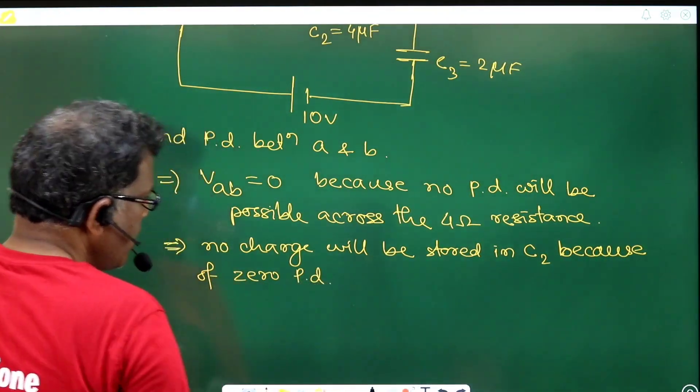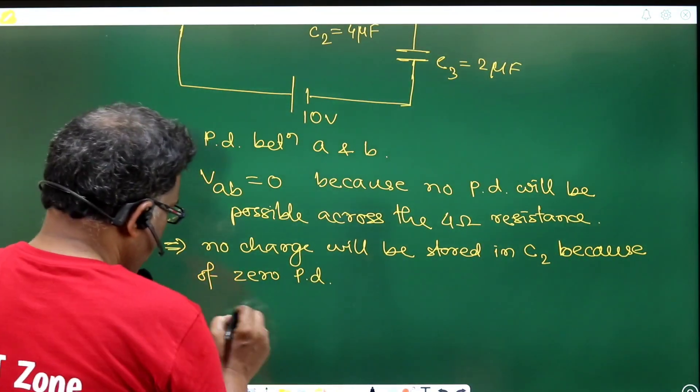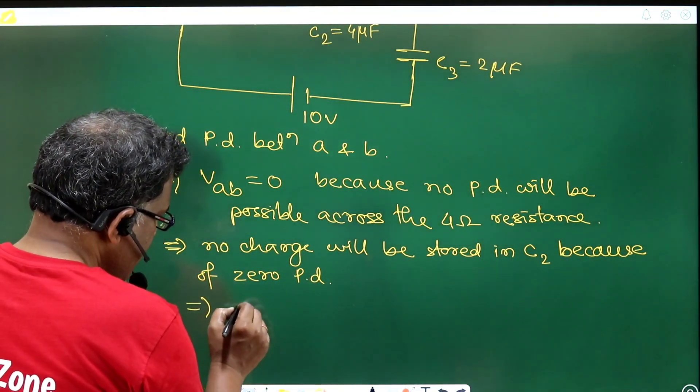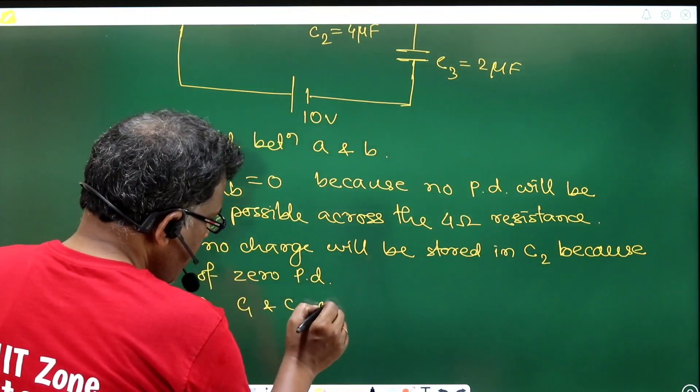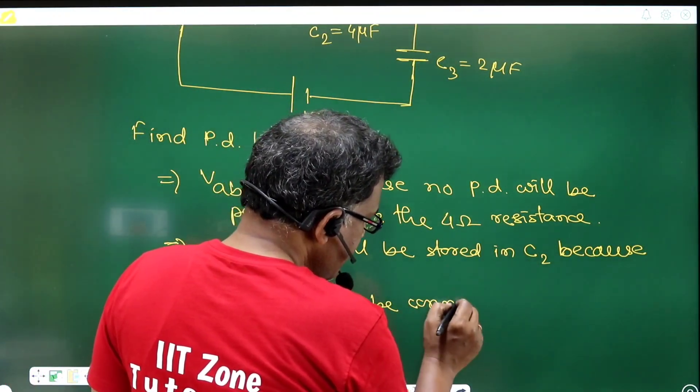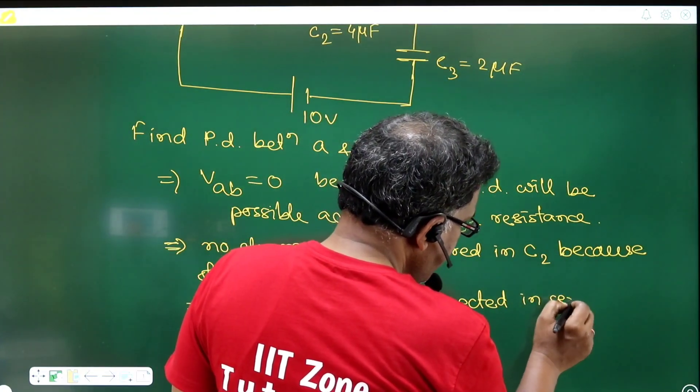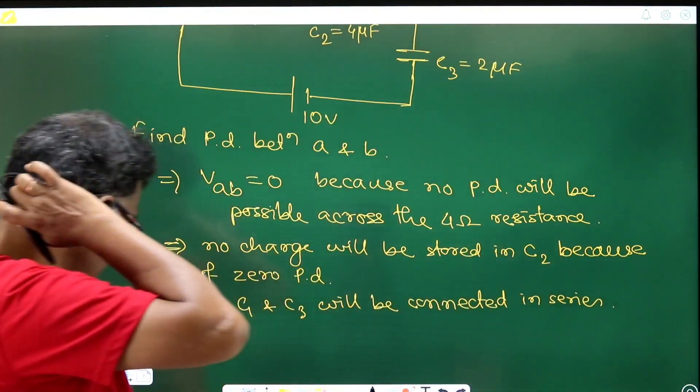This implies that C1 and C3 will be connected in series. C1 and C3 will be likely connected in series. Is that clear?